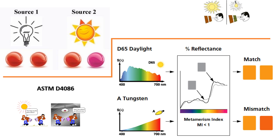Metamerism is a problem that must be recognized and accounted for in industrial color matching. On the other hand, metamerism is very useful and is responsible for the successful properties of human vision and for the success of color imaging systems like photography, television, and printing. These imaging systems are able to produce convincing representations of real-world scenes using just three primary colors. There is a standard method for visual evaluation of metamerism: ASTM D4086, defined by the American Society of Testing and Materials.